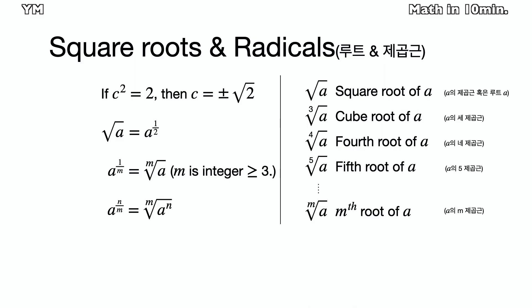Square roots and radicals. If a square of c is 2, then c does not exist in the rational number. Therefore, defining square roots and radicals are necessary to express the irrational number. So c is defined as positive and negative square root of 2.